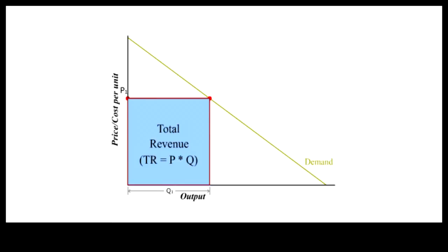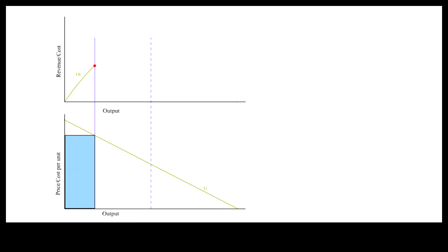Let's plot the total revenue curve TR. The vertical distance in the upper panel simply maps the blue area below.